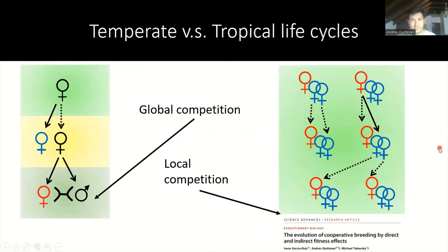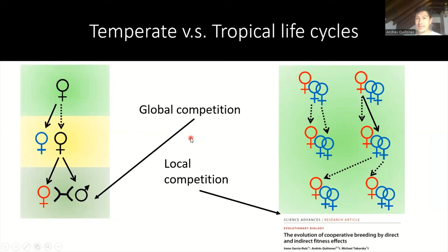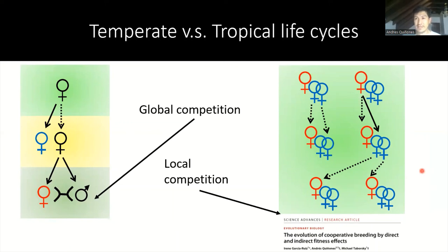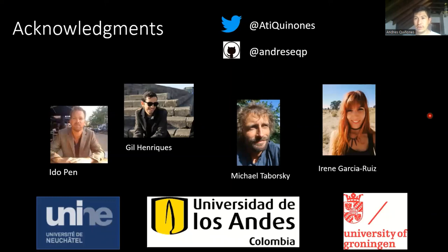Finally, I'd like to emphasize that the bivoltine life cycle with an overwintering period creates a situation of reduced kin competition for control over reproduction within groups. This contrasts with life cycles more akin to tropical environments, where there is continuous reproduction throughout the year and workers have the potential to replace the main reproductive of the nest. A recent model shows this has an important effect on the evolution of these life cycles: direct fitness benefits are much more important for the evolution of cooperative breeding in that context compared to the more temperate life cycle presented here. I'd like to thank my collaborators in this work.